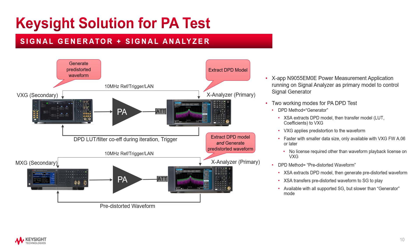Now let's look at the first solution: signal generator plus signal analyzer. A LAN connection is between the SA and SG for trigger and reference use. The N1955-EM0E PA application runs on the signal analyzer as the primary module to control the signal generator. There are two working modes. The first is called Generator mode — in this mode, the SA extracts the DPD model and transfers it to the SG. The SG then applies pre-distortion to the waveform. This mode is faster with a smaller data size because it only transfers the model.